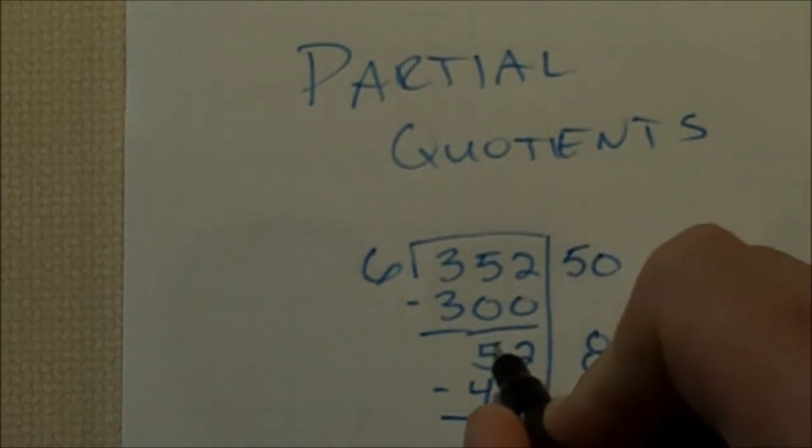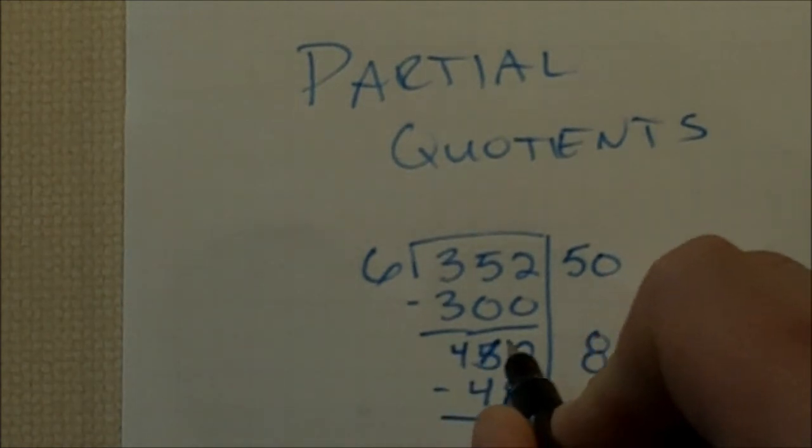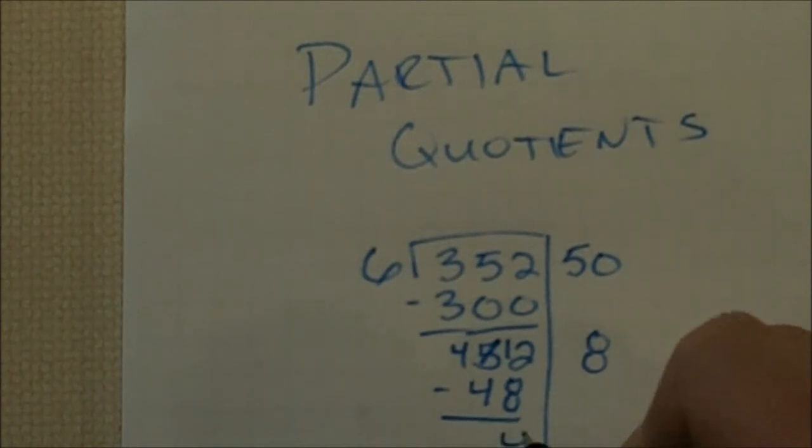2 minus 8 can't do that. So we borrow over from the 5, make that a 4. This now becomes a 12. 12 minus 8 is 4. 4 minus 4 is 0.